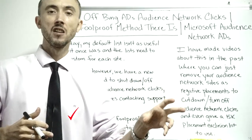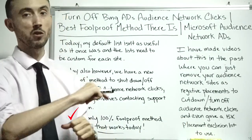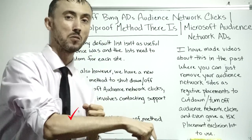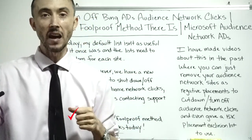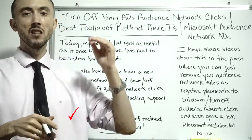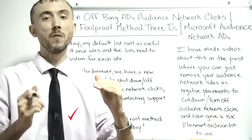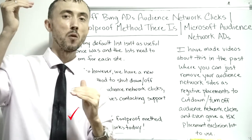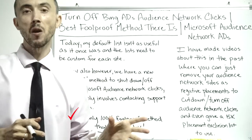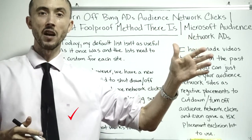If you just have regular search clicks on Bing — no audience network — you'll make about 30% more money in addition to whatever Google Ads is bringing in. Bing generally has a lower cost per click and a higher conversion rate, so you actually make more money than on Google clicks on two different levels.